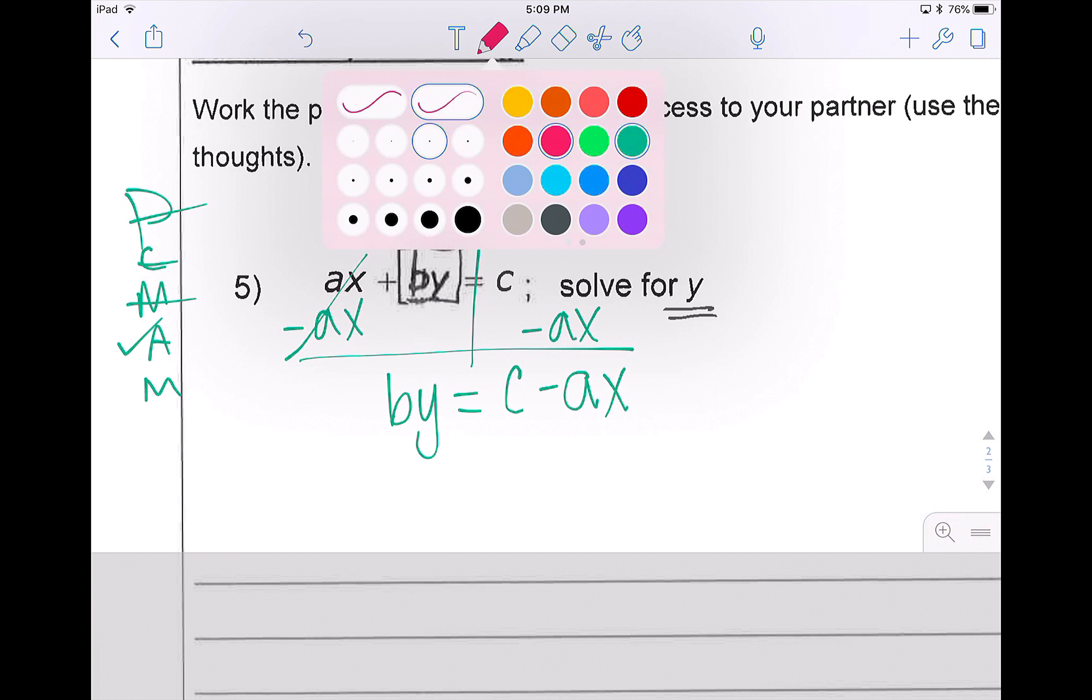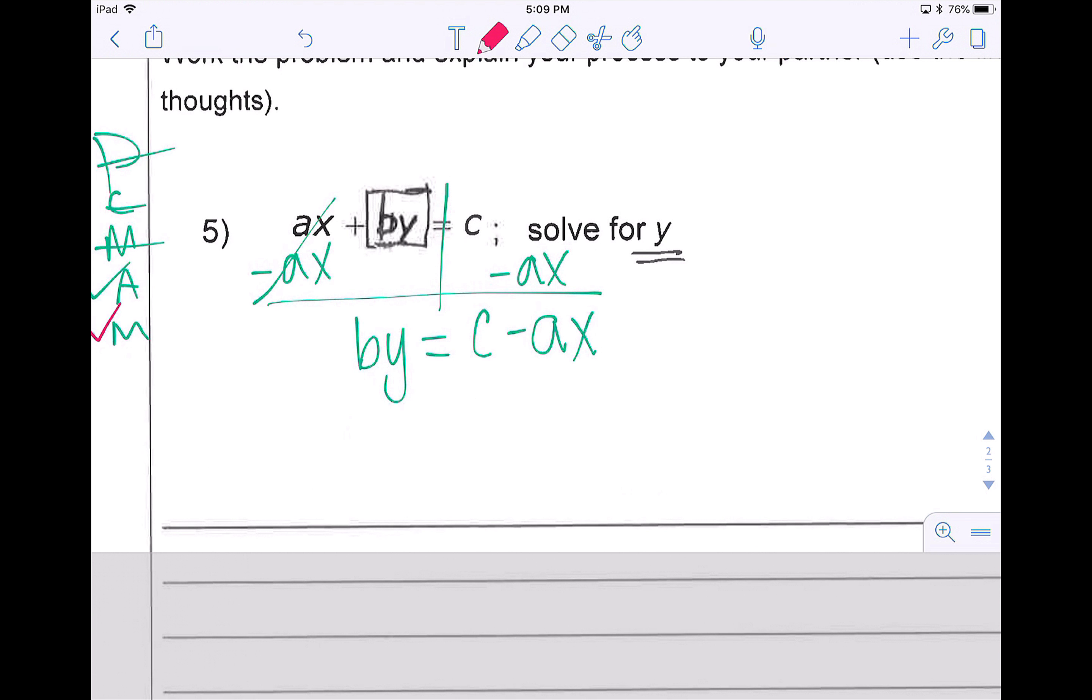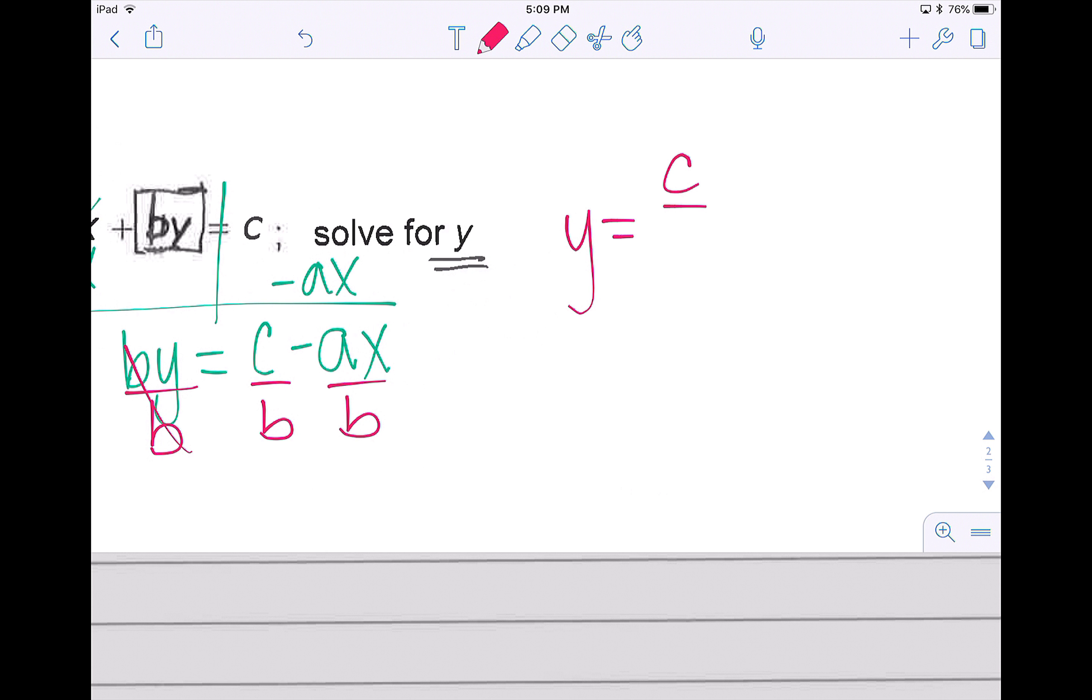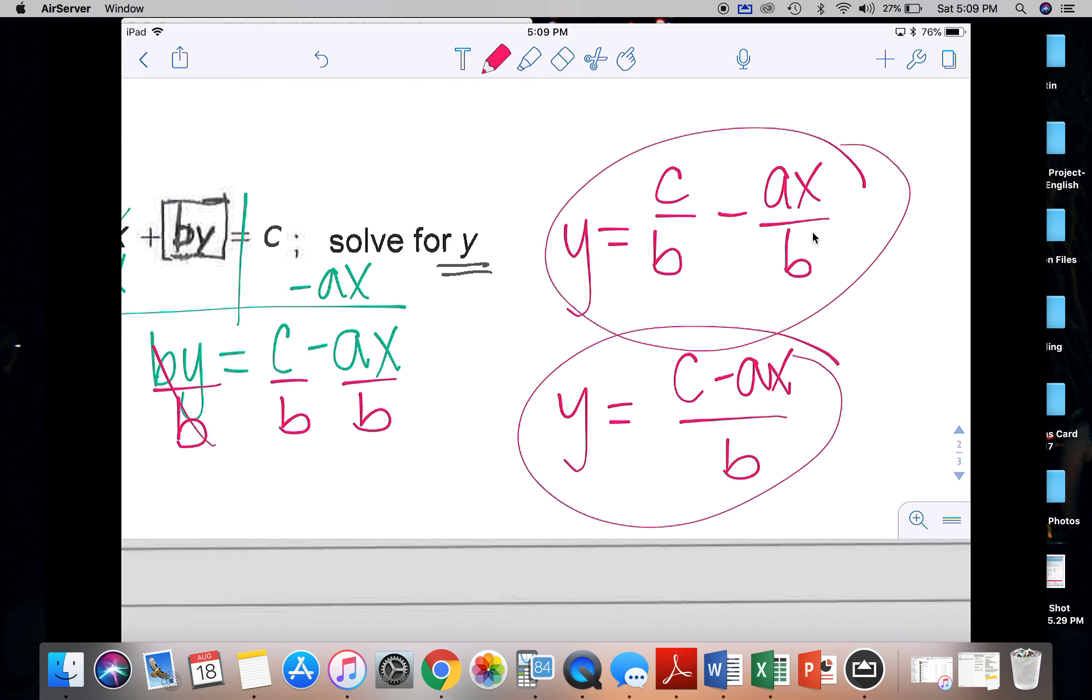I'm then going to multiply or divide. With y, there is a b, and I need to divide it out. So I will take every piece and divide it. So c divided by b, negative ax divided by b. Depending on your teacher, you could also write it like this. You could see both ways on a state test. So make sure you know that you can take the top and divide by the bottom, or take all of the pieces of the top and divide it by the bottom.